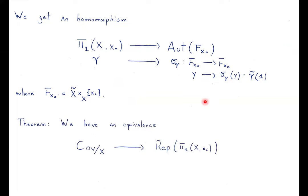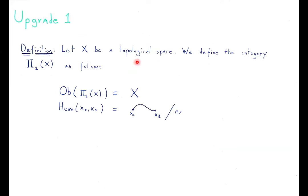It's a theorem that we have an equivalence between covering spaces and representations of the fundamental group. This is called the monodromy equivalence — we have this monodromy action, and then we have this equivalence between covering spaces and representations of the fundamental group. In this talk, I will do some upgrades of abstraction to arrive at the exodromy equivalence.